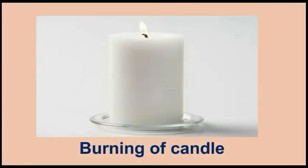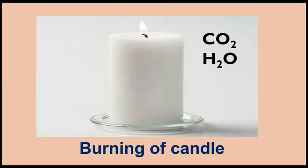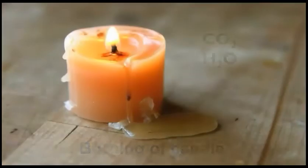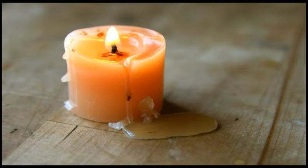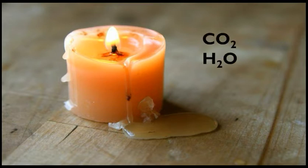The burning of a candle is an example in which both physical and chemical changes take place simultaneously. When a candle is lighted, some of the solid wax first melts and turns into liquid — this is a physical change. Then it burns to produce a flame. New substances CO₂ and H₂O vapour are formed along with the evolution of light and heat energy — this shows a chemical change. When some of the molten wax drops on the floor, it again solidifies, which shows a physical change.